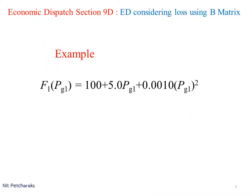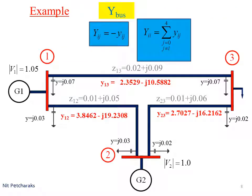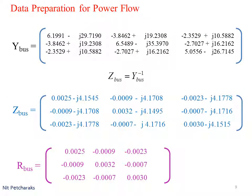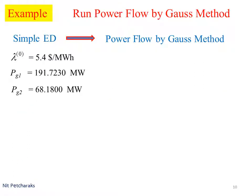Cost functions are given. Generator G1 is cheaper than G2. Change line impedance to line admittance, which is the reciprocal of line impedance. Form Y_bus and derive Z_bus and R_bus.